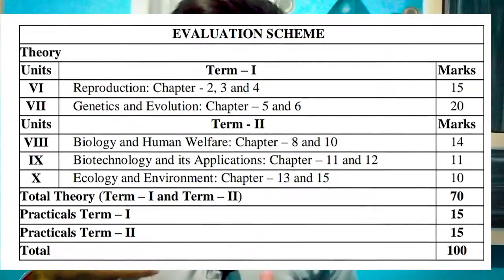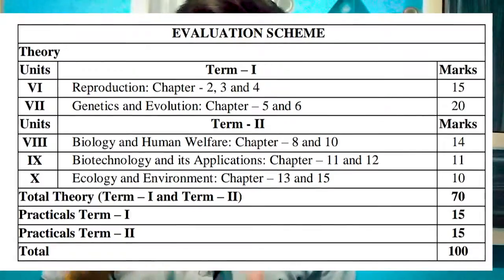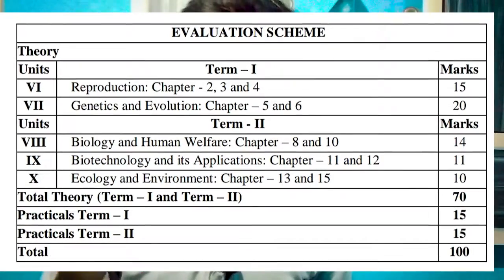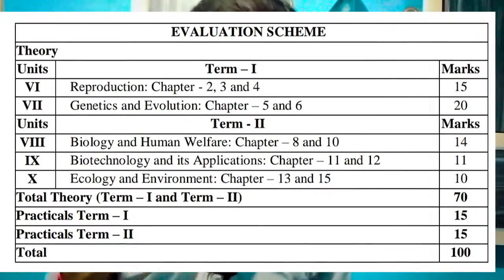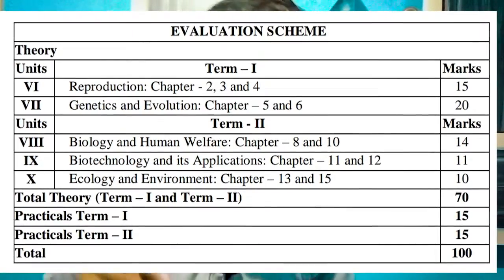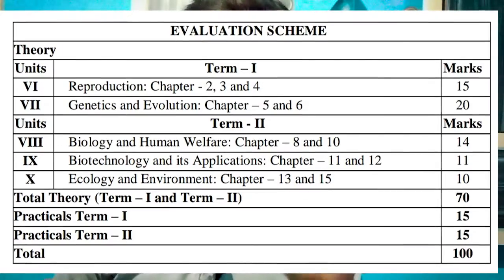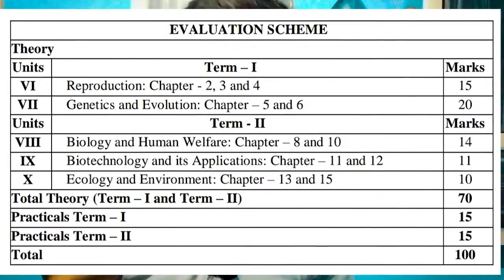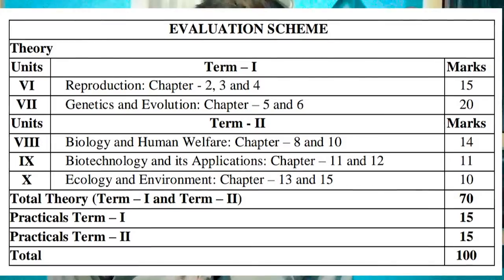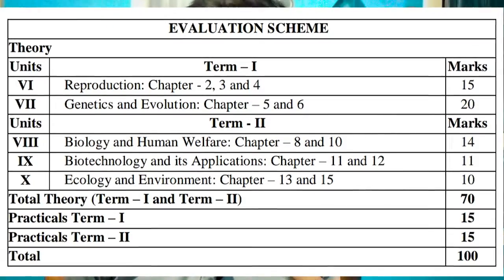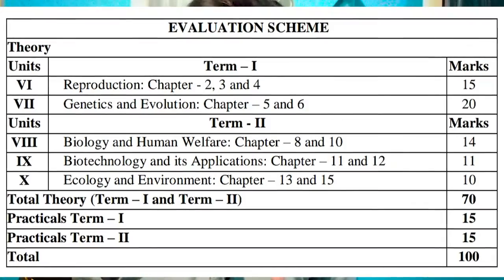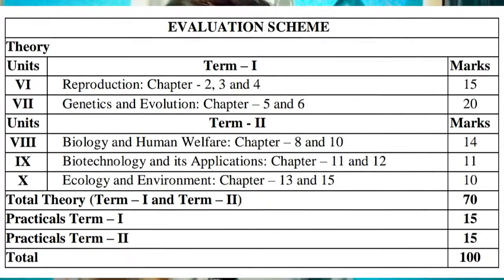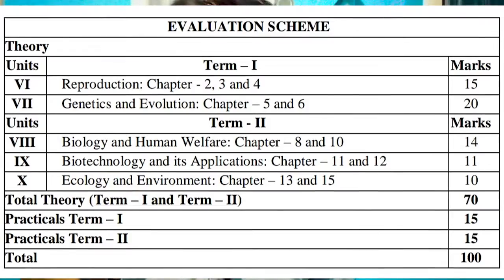For Term 2: Unit 8 is Biology and Human Welfare, covering chapters 8 and 10, with a weightage of 14 marks. Unit 9 is Biotechnology and its Applications, covering chapters 11 and 12, with 11 marks. Unit 10 is Ecology and Environment, covering chapters 13 to 15, with 10 marks. Term 2 total is 35 marks, making the overall theory total 70 marks.